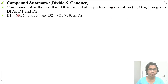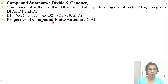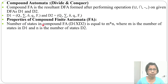Let D1 be (Q1, Σ, δ, q, F1), where Q1 is the set of states and F1 is the set of final states. And let D2 be (Q2, Σ, δ, q2, F2). Now let's look at the properties of compound finite automata.